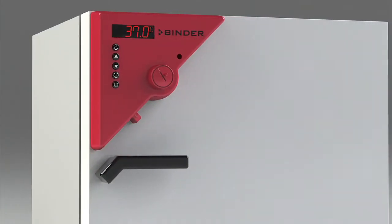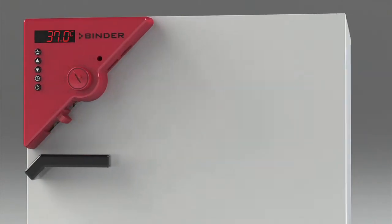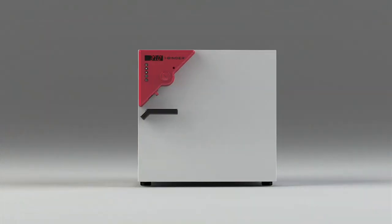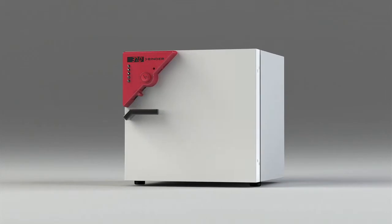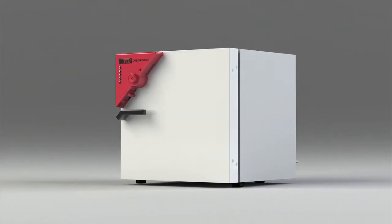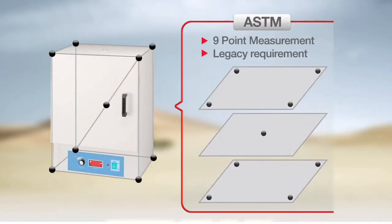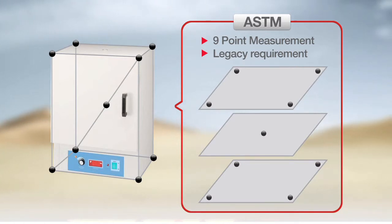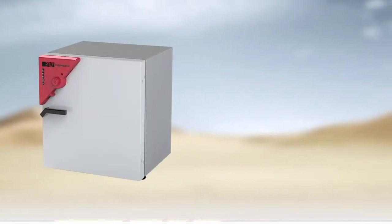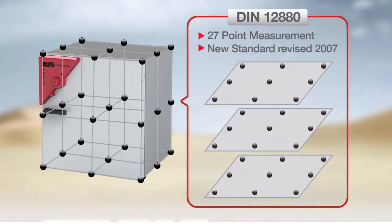Here are some of the key features that make Binder Ovens the best choice for your investment. First, Binder Ovens adhere to the highest standard of temperature measurement in the industry. Most competing ovens adhere to the older 9-point ASTM temperature measurement standard. This results in lower temperature uniformity throughout the oven. Binder Ovens follow the much stricter 27-point DIN 12-880 standard established in 2007, giving you uniformity specifications you can trust.